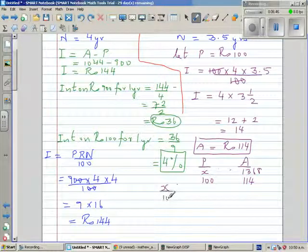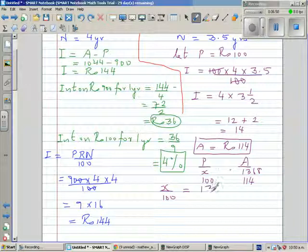Let's say X is the principle that we want to find. So the ratio of this would be equal to the ratio of this. So I can say X over 100 is equal to 1,368 over 114. Now multiplying both sides by 100, X, which is the principle that we want,